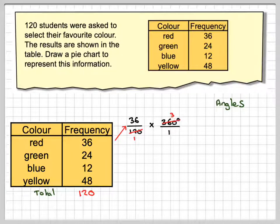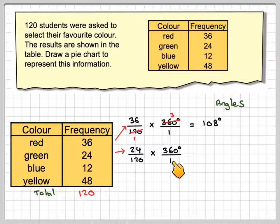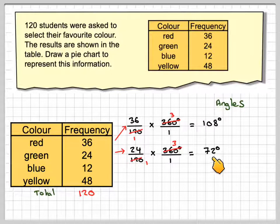So 3 times 36 gives me 108 degrees. Then we take 24, do the same thing. 24 over 120 of 360 degrees over 1. We will cancel again. And then 3 times 24 is 72 degrees.